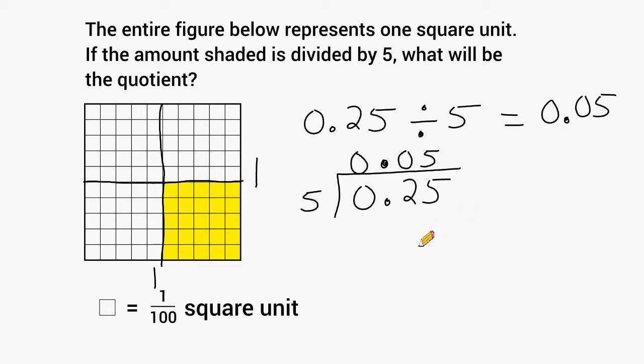Now, another way we could have solved this problem is by taking the amount shaded here and breaking it into 5 equal groups. And then just seeing how much is in each one of those groups, because that is going to be our answer.